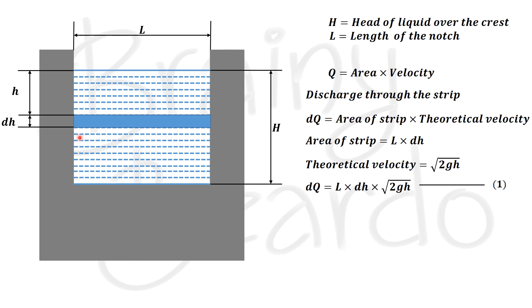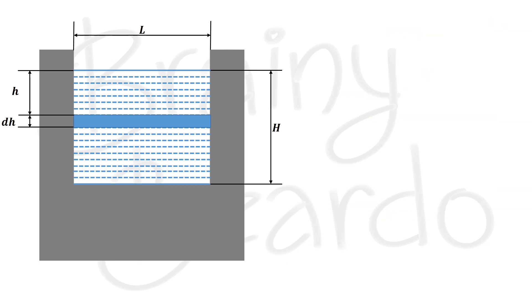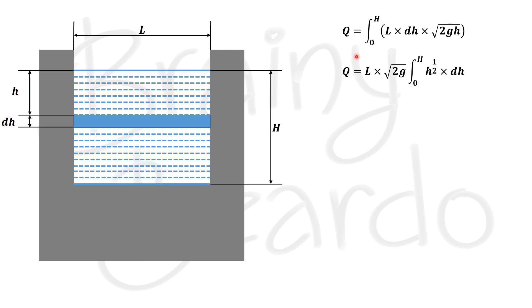To obtain the discharge for the entire fluid surface, we need to integrate dq within the limits 0 to H. So Q equals the integral from 0 to H of dq. Substituting the value of dq, we get Q equals the integral from 0 to H of L into dH into root of 2gh. Since L is a constant (the length of the notch) and root of 2g is also a constant, we take them outside: Q equals L into root of 2g, integrated from 0 to H of h to the power of half into dH.